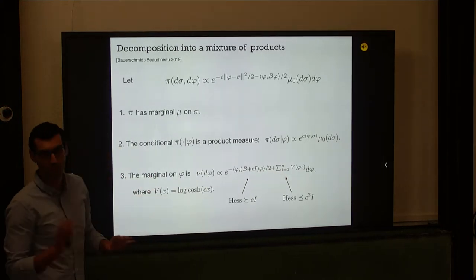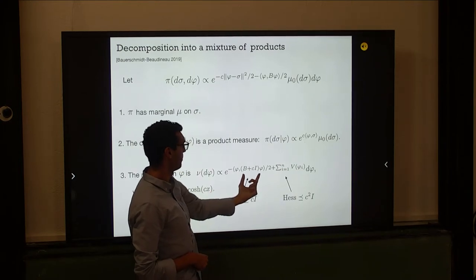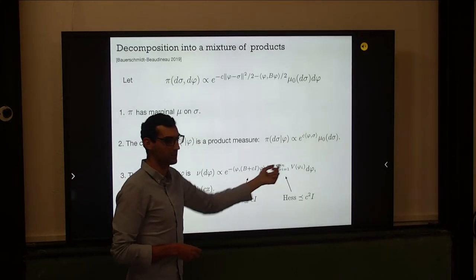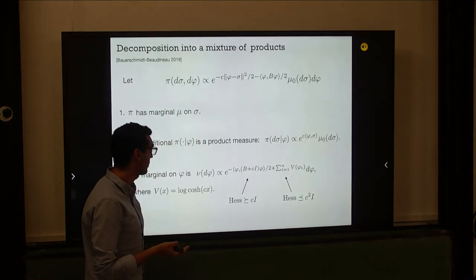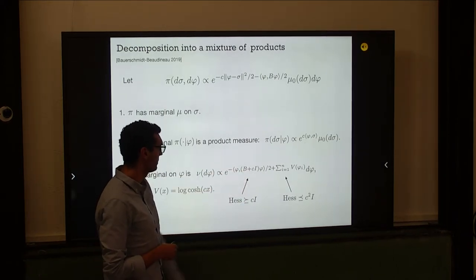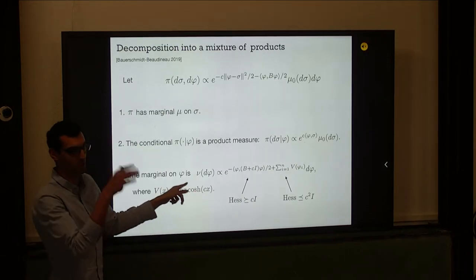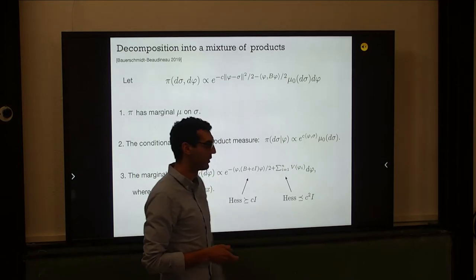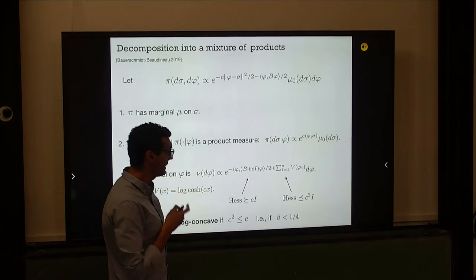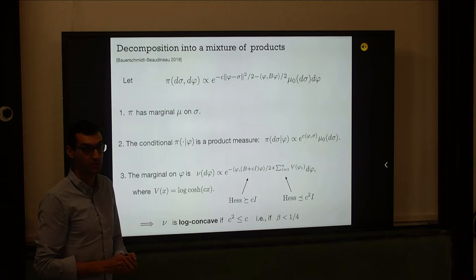When is this measure log concave? The potential has two competing terms — one convex and one concave. We need to compare their curvatures. The curvature of the Gaussian term is at least C. The Hessian of the log cosh term is diagonal with entries bounded by C squared. So we need C to be larger than C squared, which means C is four beta, requiring beta smaller than one fourth. That completes the proof — it's one page.